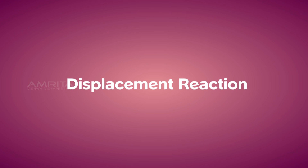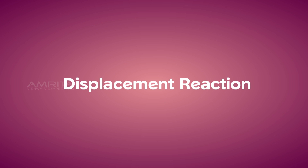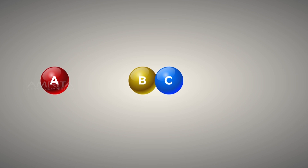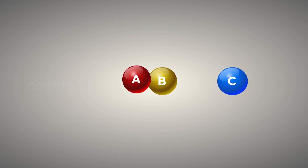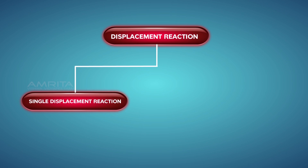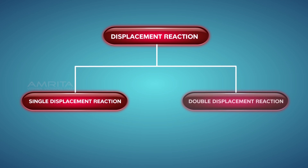Displacement reactions are those chemical reactions in which one chemical species of a reactant is replaced by another chemical species. Displacement reactions can be generally classified into two types: single displacement reaction and double displacement reaction.